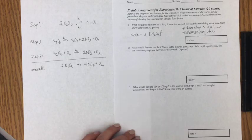Now the second question here asks us what do we do if step two is the slowest step and step one is in rapid equilibrium. And the remaining steps are fast.